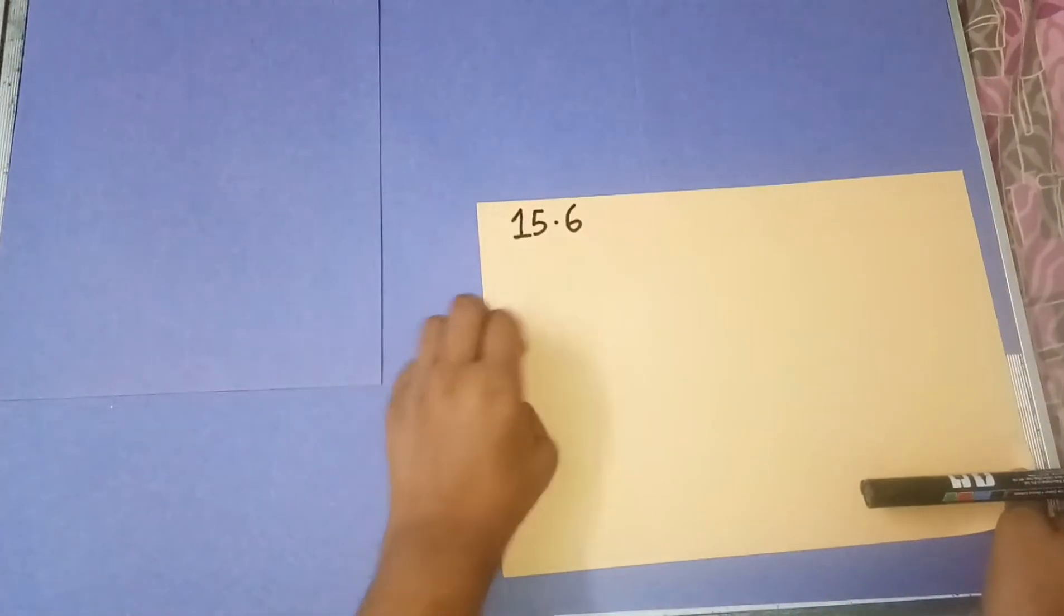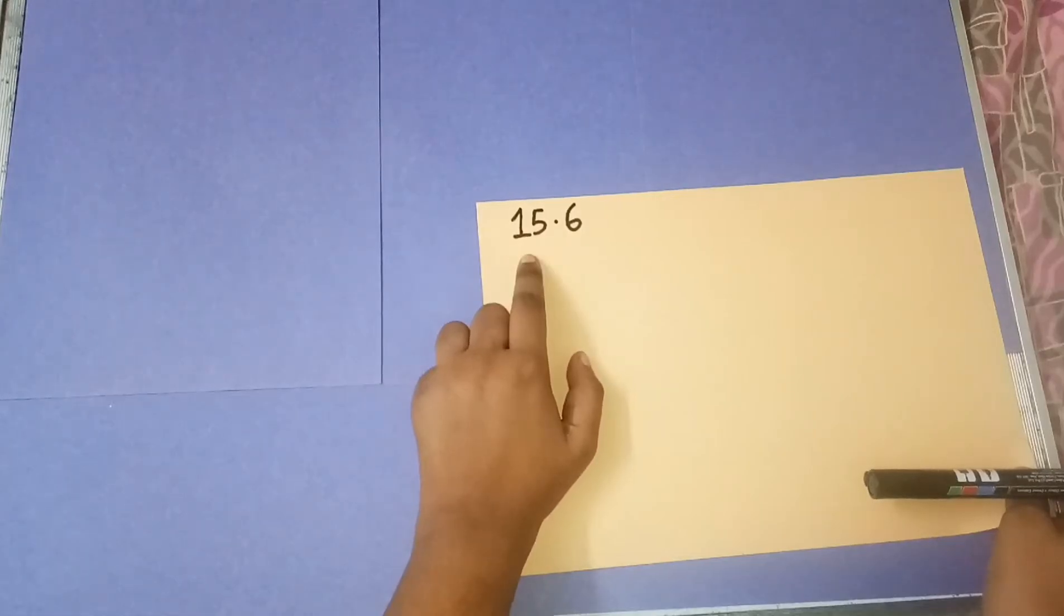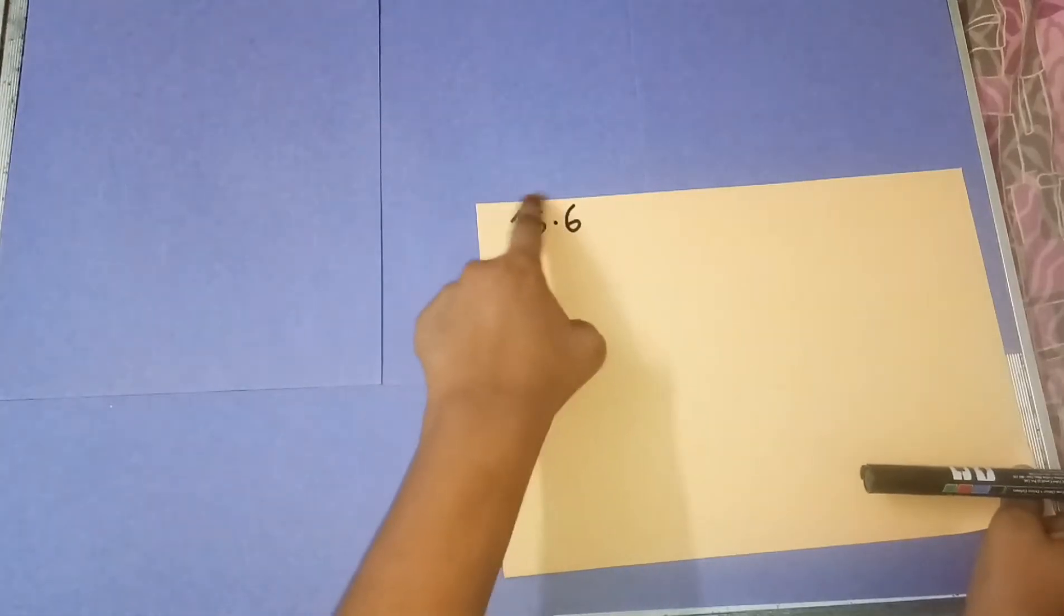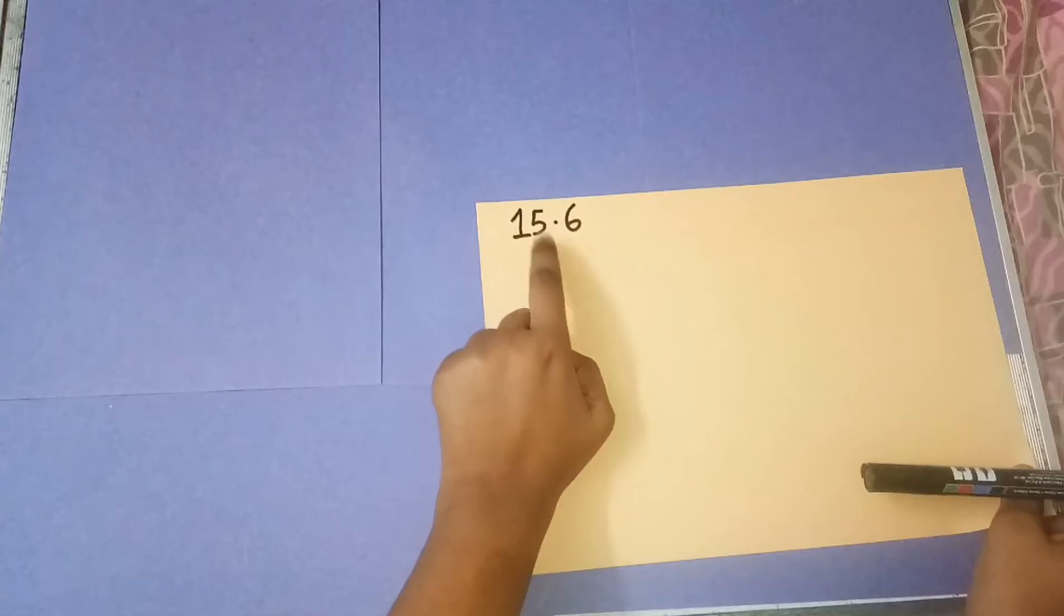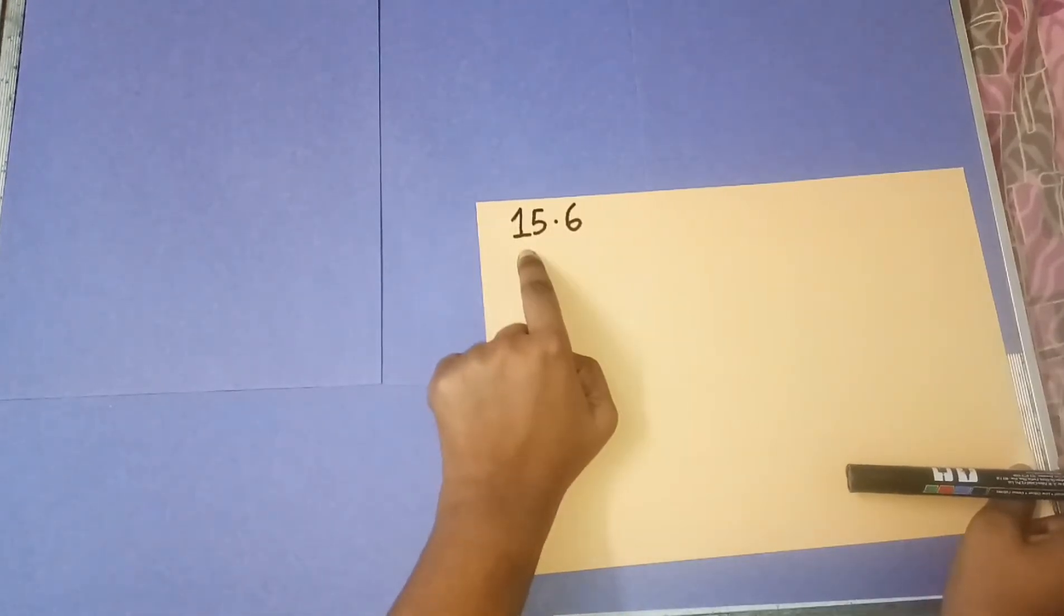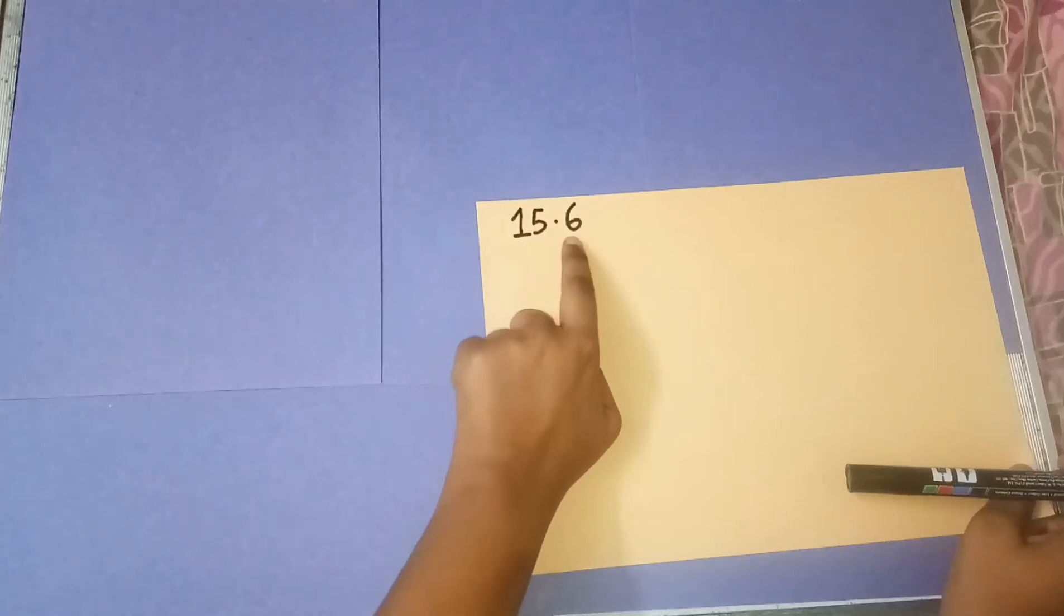First, know that this given number 15.6 has two parts: the whole number part and the decimal part. In other words, 15 is called the characteristic and 0.6 is called the mantissa.